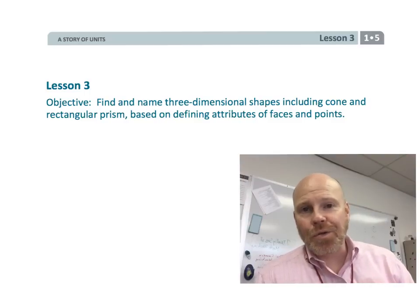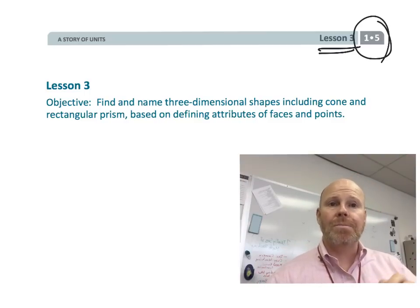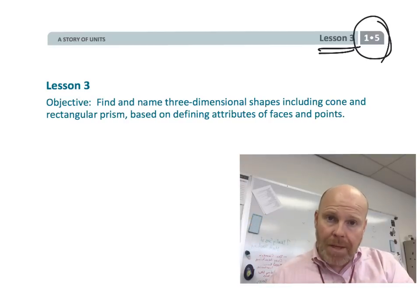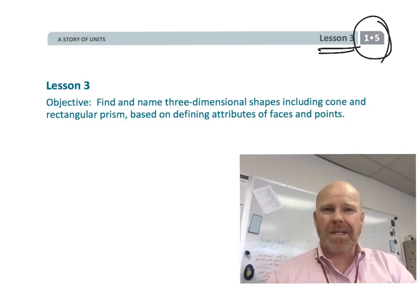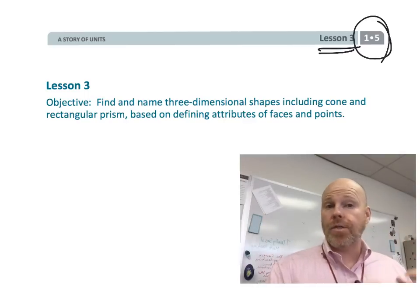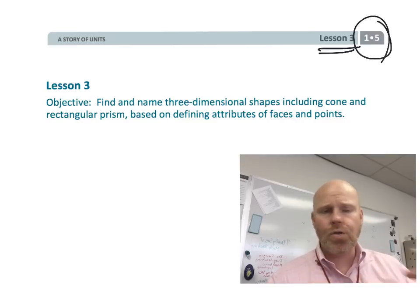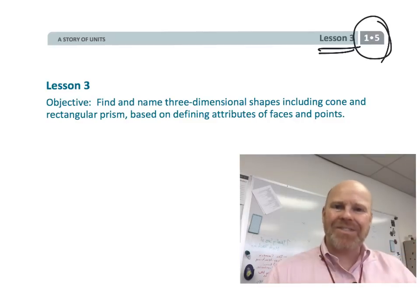All right, this is first grade, module 5, lesson 3, and in this lesson, students are going to be moving from those two-dimensional figures, square, rectangle, trapezoid, and we're going to be moving into the three-dimensional figures, things like cone and prism and cube and all that sort of stuff, so let's get started.